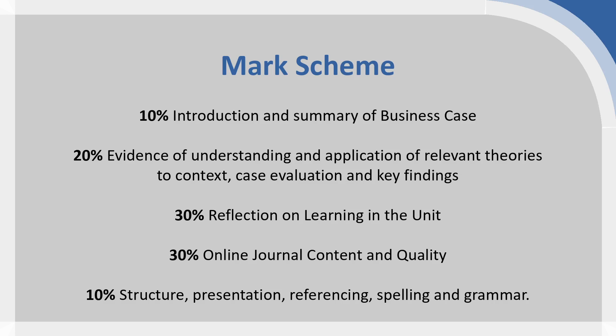30% is awarded on your online journal content and quality — looking at your weekly journal entries and how you've reflected on week-by-week activities. Lastly, 10% is for how you've structured your assessment, professional presentation, quality of referencing, spelling, and grammar. Hopefully this has been helpful in understanding your assessment. Please read the assessment brief carefully, and do ask your unit coordinator if you have any further questions.